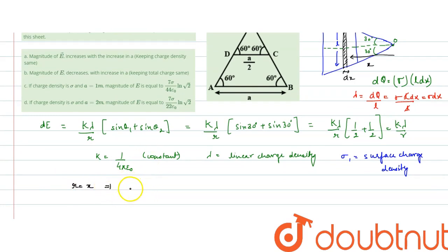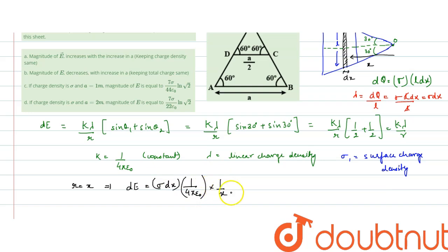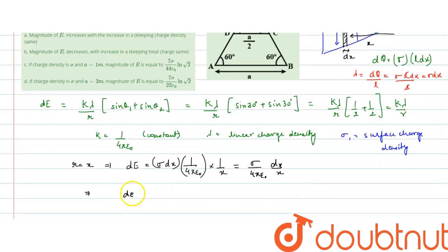Therefore, we can finally say that the electric field due to that small strip is dE = σ·dx · (1/(4πε₀)) · (1/x), which equals σ·dx / (4πε₀·x). On integrating both sides, dE = σ/(4πε₀) · dx/x.